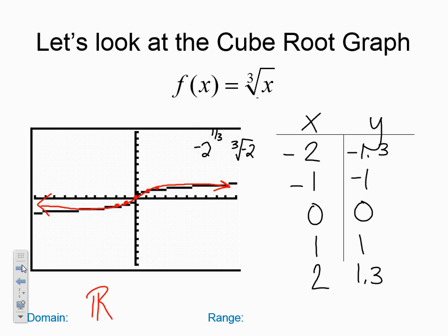It has two sides of this graph, and I can plug in both positive and negative answers. My range will also be all reals because I'm getting both positive and negative answers and zero there. I don't have a definite limitation like I did on the square roots.